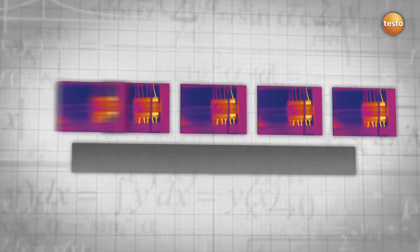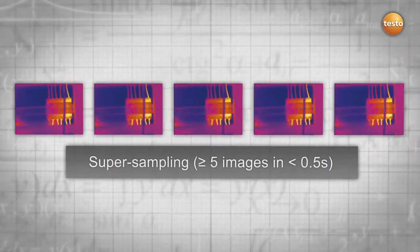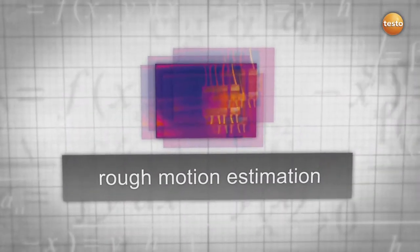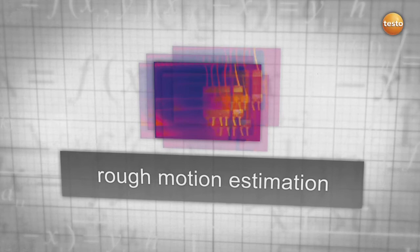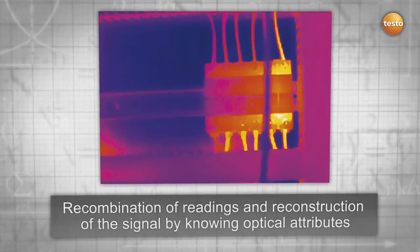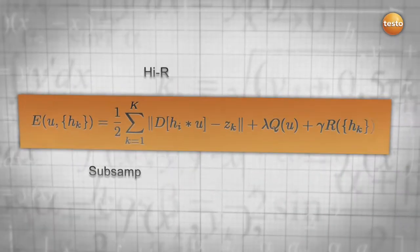The technology works as follows: the thermal imager takes multiple images in less than 0.5 seconds. They are combined in one high-resolution image, uniting the technologies of super sampling and deconvolution. This process is reflected in the formula that was exclusively developed for the Testo Super Resolution technology.